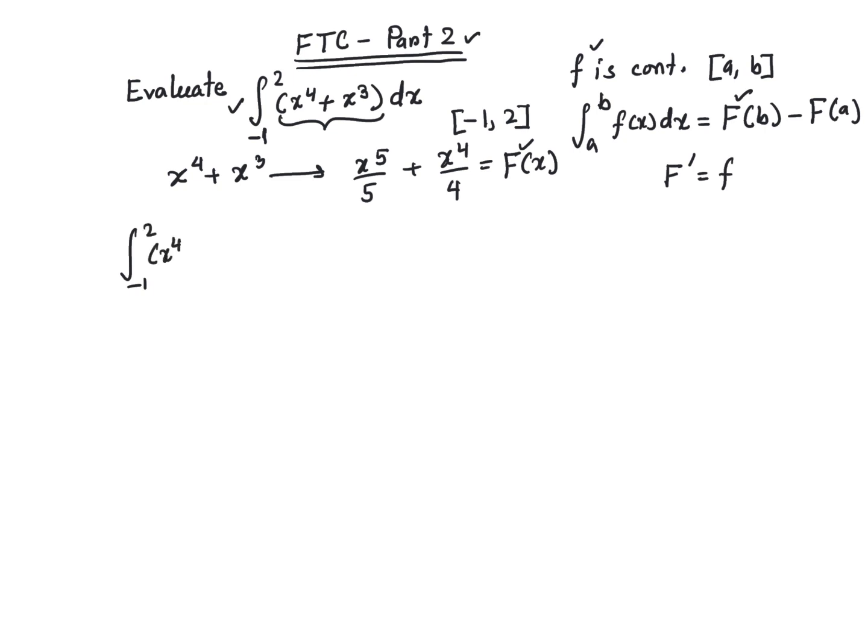The integral from -1 to 2 of x^4 + x^3 dx is going to equal [x^5/5 + x^4/4] evaluated from -1 to 2.